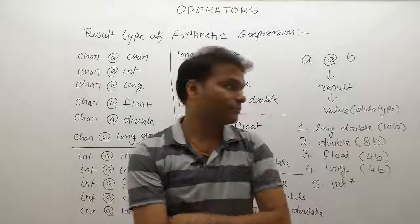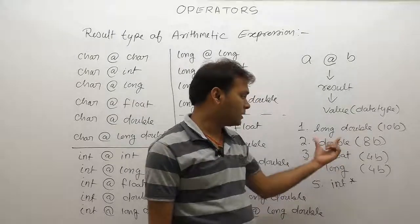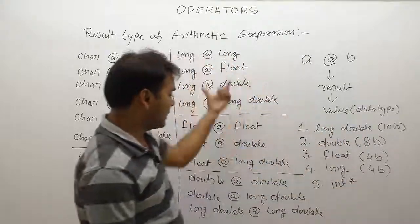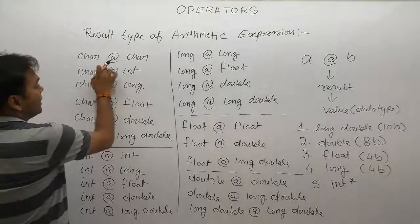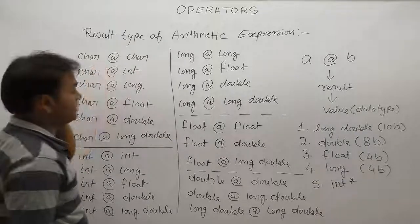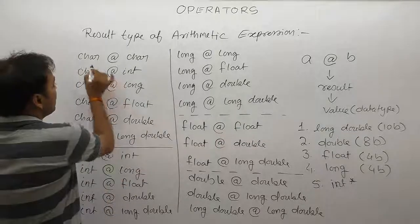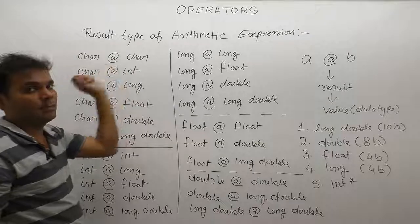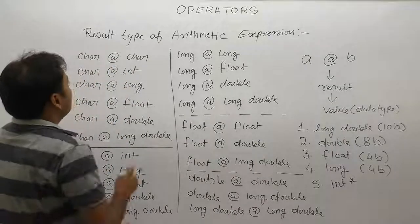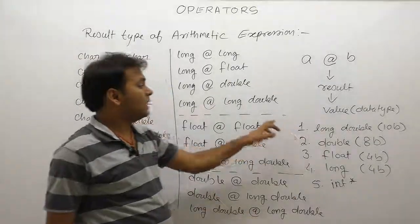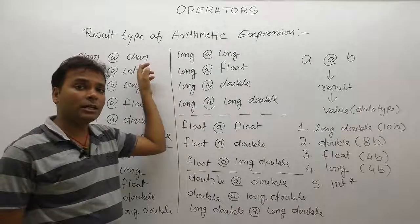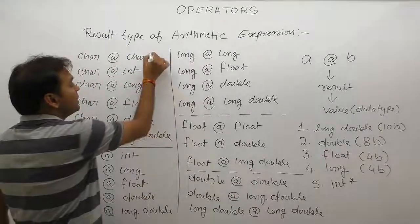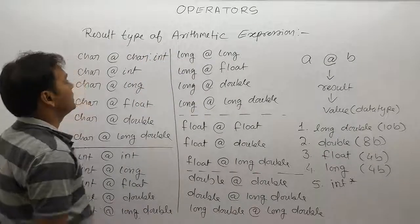For example: if the first operand is long double and the second operand is float, then the result is also long double. Here, with any arithmetic operator — plus, minus, multiplication, or division — the result follows the same rules. We check the data type of the first operand and second operand. We apply the rules: check for long double — found or not found — then double, then float, then long, then integer.